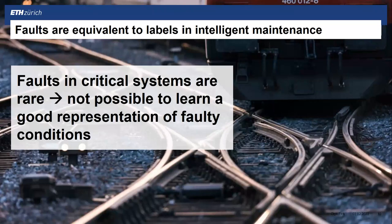What we are most interested in are faults, which in our case are equivalent to labels. We would need fault trajectories or degradation trajectories, and a lot of different fault types to train our algorithms. But safety-critical systems are rare — it's not possible to collect this large amount of representative data.